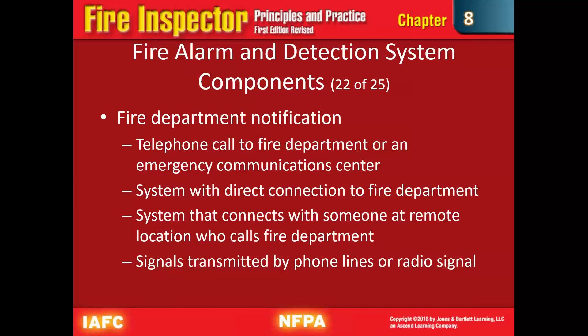The fire department can be notified by telephone to the communications center, by a direct connection to the fire department — some industrial plants with their own fire departments may have a system that goes directly to them — or by alerting someone at a remote monitoring location such as a guard monitoring video cameras. Signals are typically transmitted via phone lines or radio signal, depending on the setup.